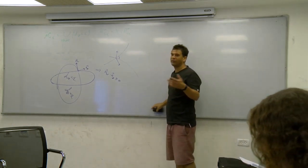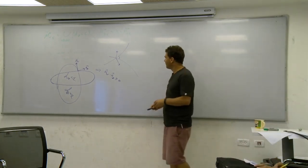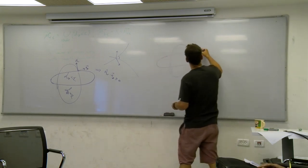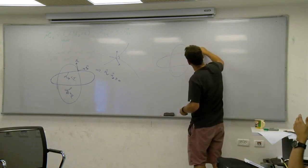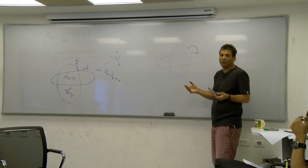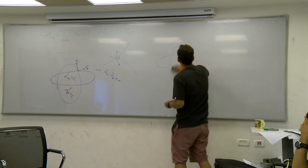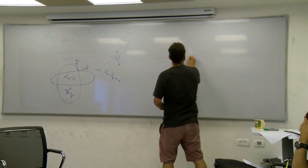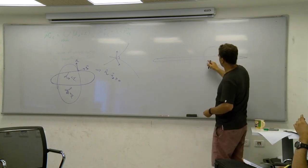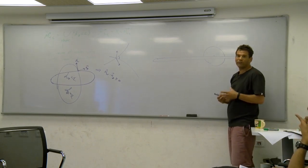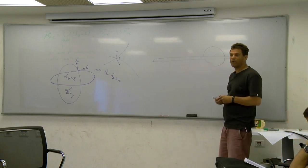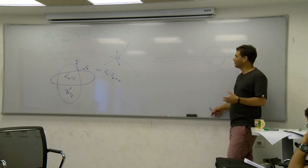We are in the thick part and the injectivity radius is large, so we can put balls. But the problem is that the thick part is the complement of things like the thin part. When you put a ball in the thick part, it's not a ball anymore in the subspace topology. If the thin part has a sharp protrusion, you might be left with something that is not even connected, or not contractible.